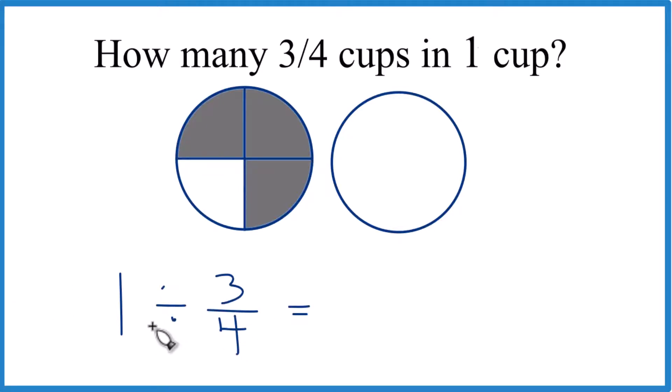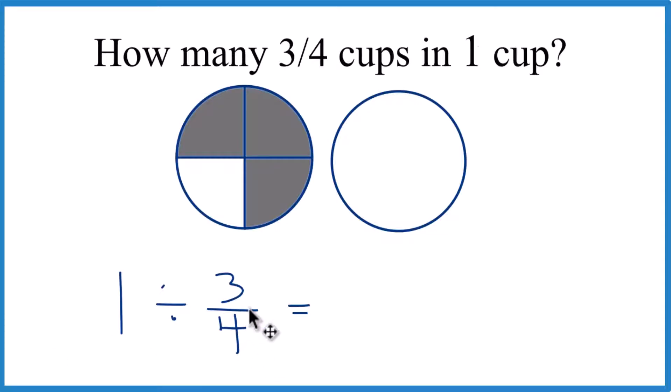And what we can do instead of division, if we take the reciprocal here, so we move the three to the bottom and the four up here. So that's the reciprocal of three-fourths. Now we can just take, instead of division, we can do multiplication.